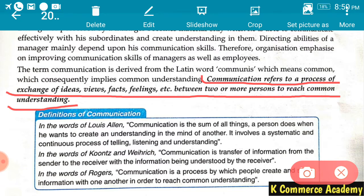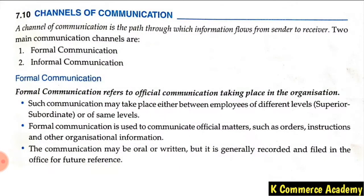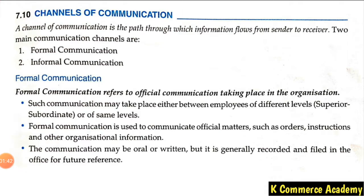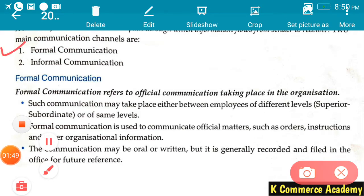Now we have the types of communication, also called channels of communication. A channel of communication is the path through which information flows from sender to receiver. The sender is the person who wants to transfer the information, and the receiver is the person to whom the information is addressed. Two main communication channels are formal communication and informal communication.